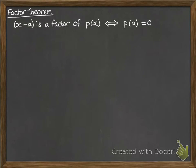x minus a is a factor of p(x) if and only if p(a) equals 0. So that's how you read that line, but I'm going to show you how to use it in a moment.